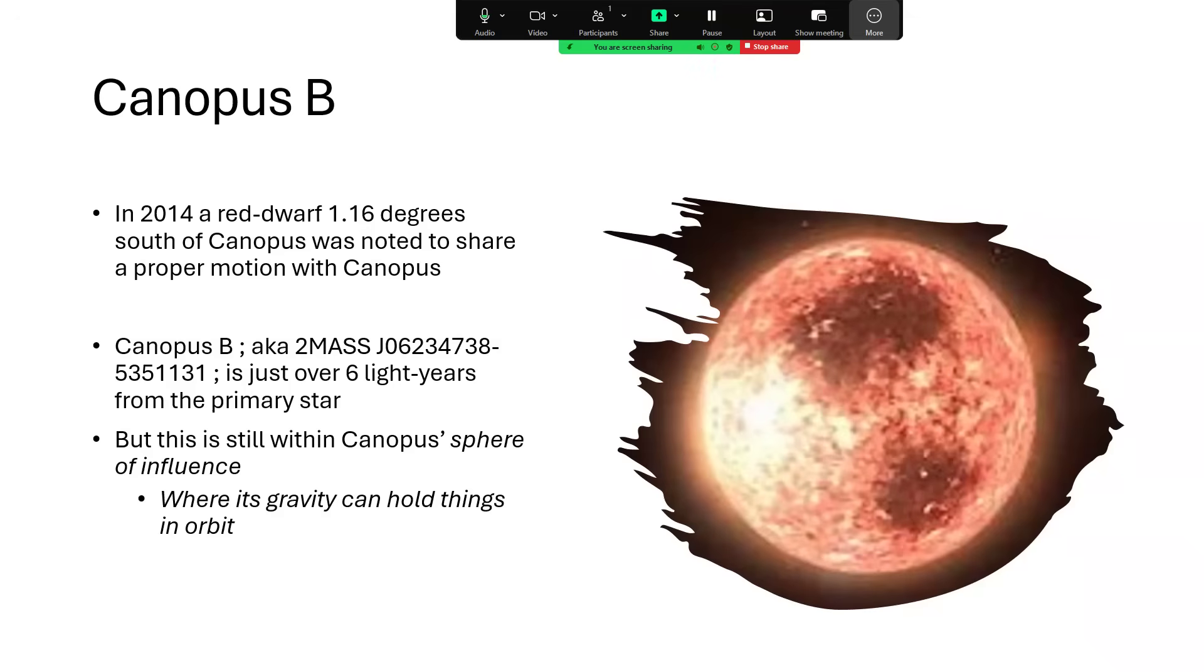But Canopus is a much more massive star, and so its sphere of influence of its gravity is considerably larger, and it could well extend out to over six light years. There are no other stars that we know of have any significant mass in the region, and so it's likely that Canopus is the controlling object here, and that Canopus B is in orbit around it. But I'm not sure that we are definitive about that.